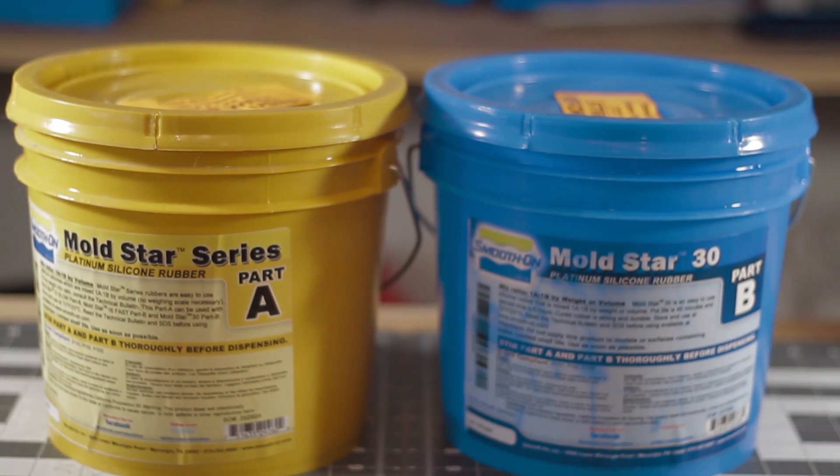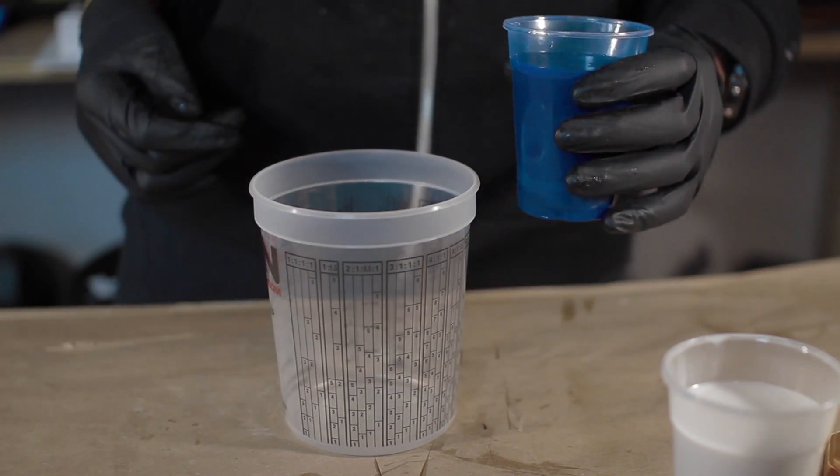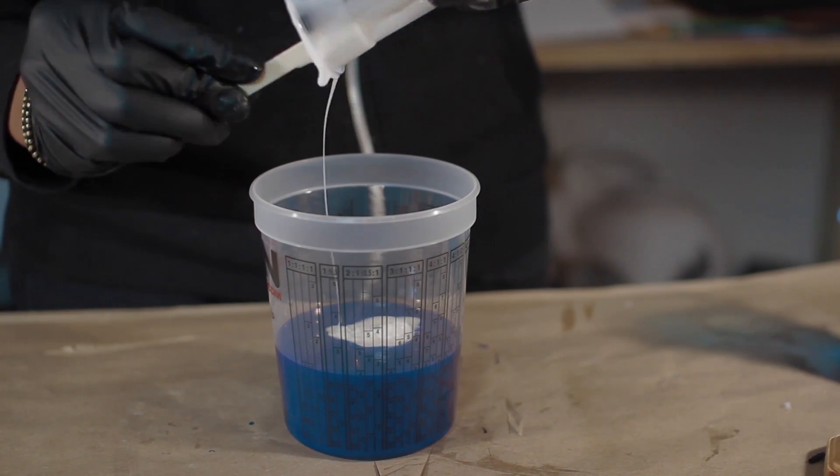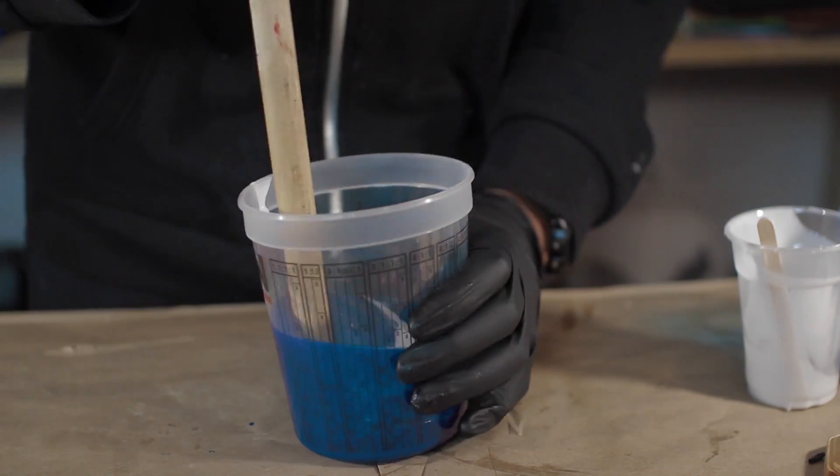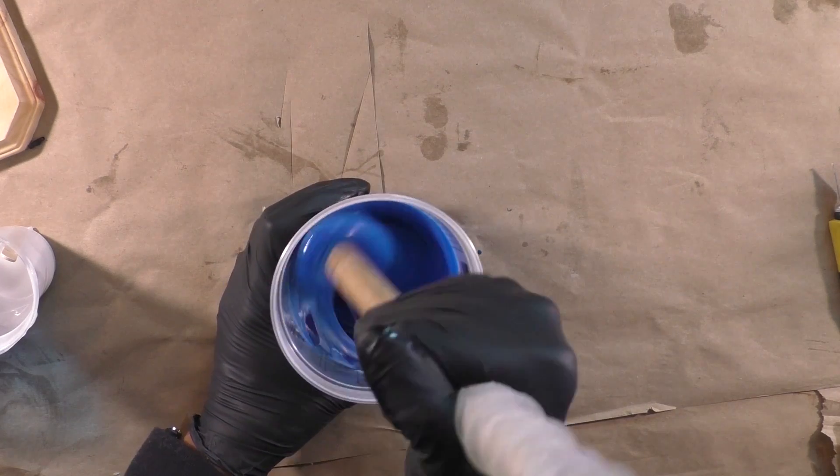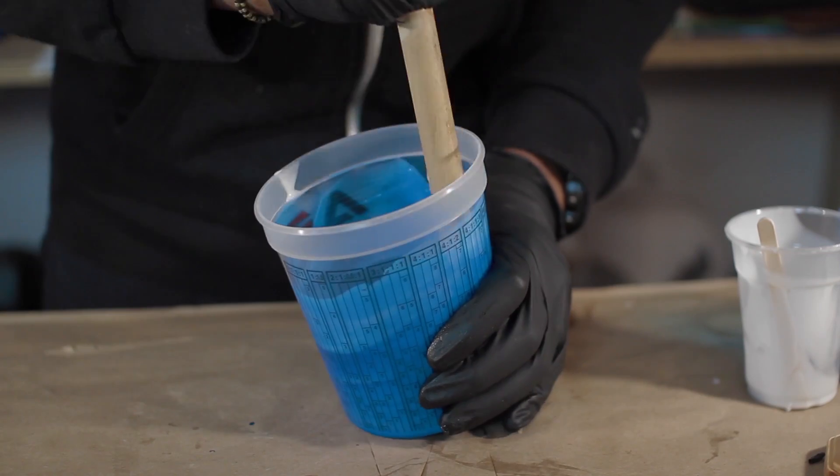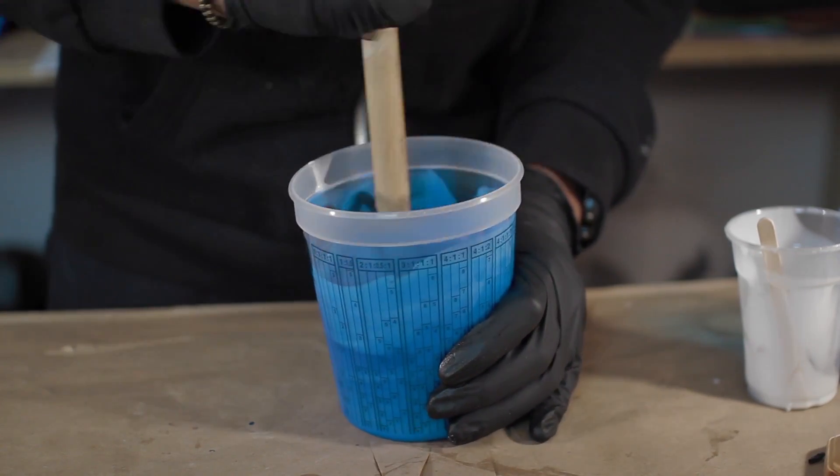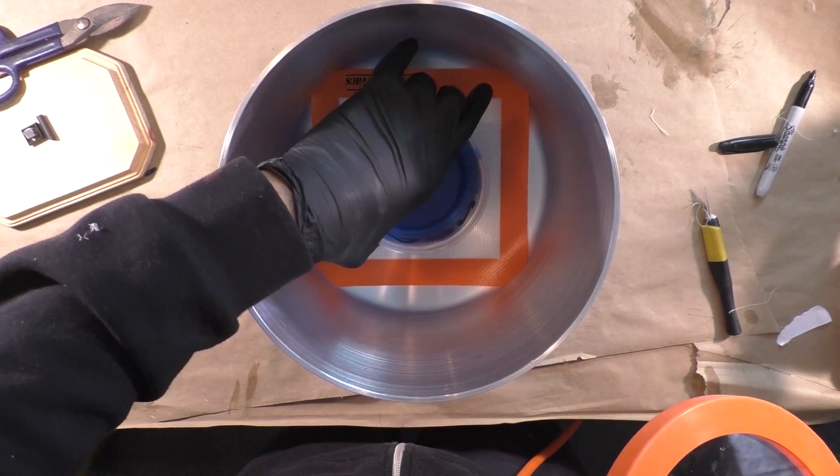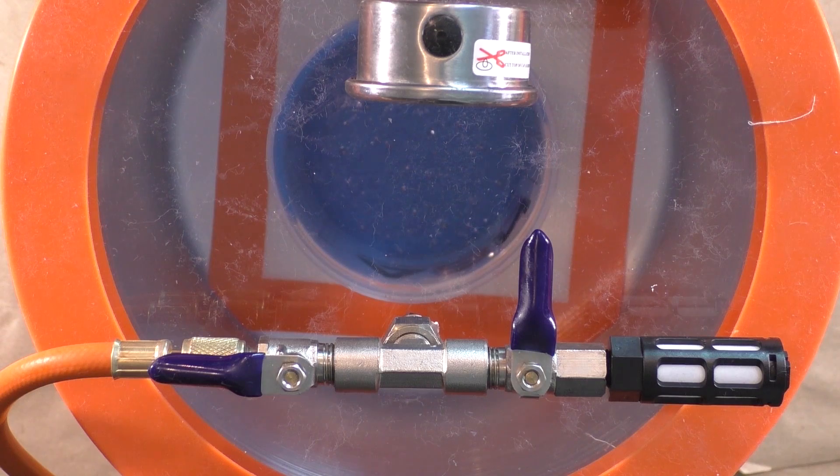For this build, I decided to use Smooth On's Mold Star 30. The silicone has a one-to-one mix ratio of parts A and B, so I poured out even parts in separate cups and proceeded to mix. According to the manufacturer's technical bulletin, it is not necessary to place the mixed silicone into a vacuum degassing chamber. Although this was an extra step, I opted to place the silicone in a vacuum chamber to ensure I would not have any air bubbles. I placed the mixed silicone into the pot, turned it on, and allowed it to be vacuumed.